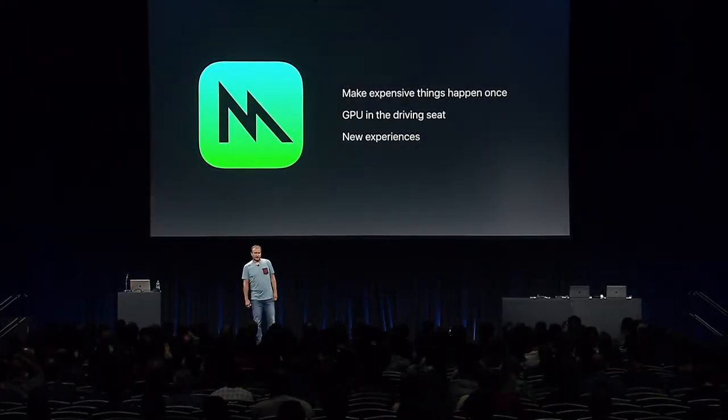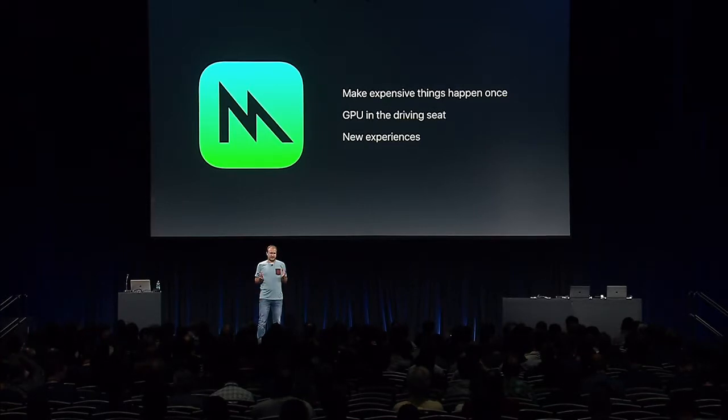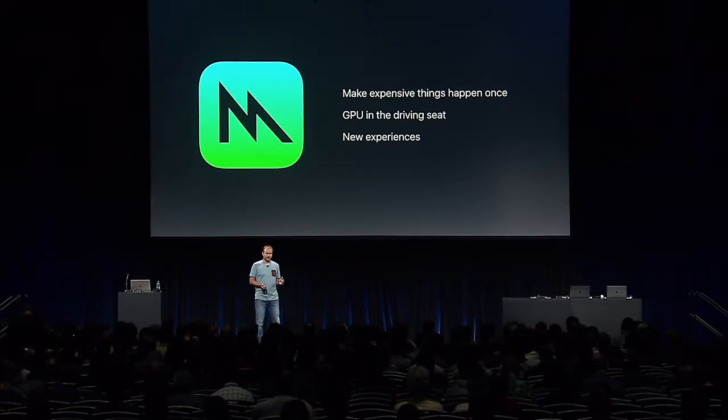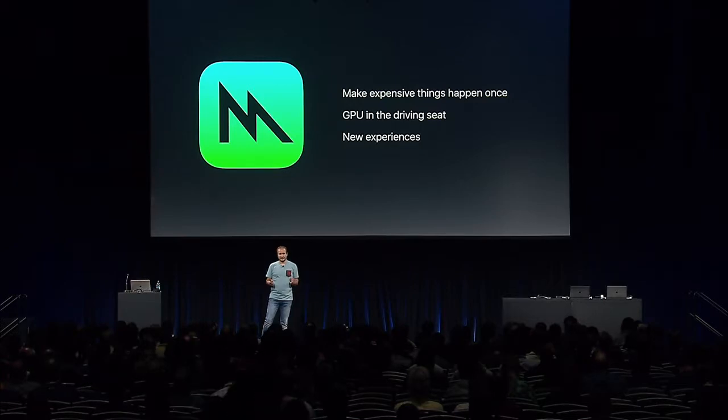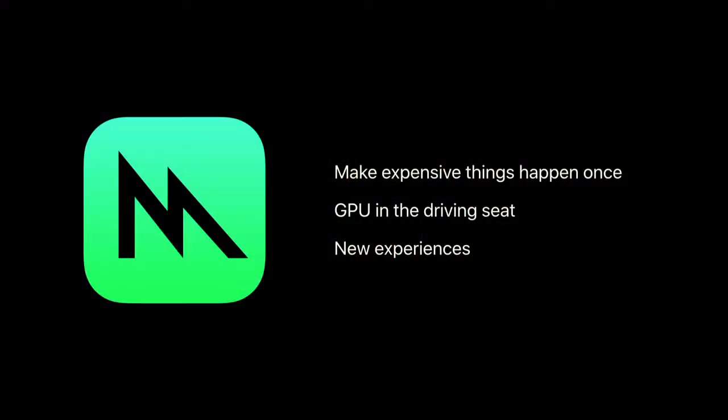With Metal 2, we are continuing our direction of moving the expensive things to happen less frequently and making sure that the frequent things are really, really cheap. Over the years, we introduced precompiled shaders, render state objects, Metal Heap last year, all to make sure that you can move the costly operations outside of your main application loop. We gave you ten times more draw calls by switching from OpenGL to Metal. And this year, we are introducing our new binding API that gives you some more.